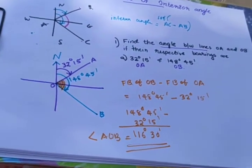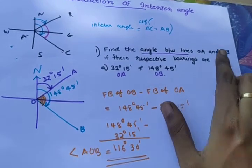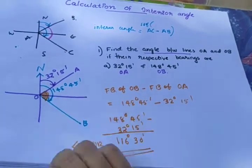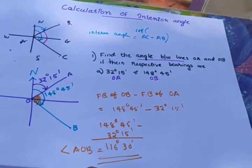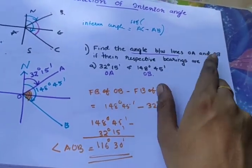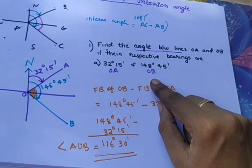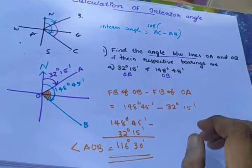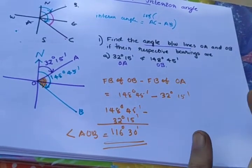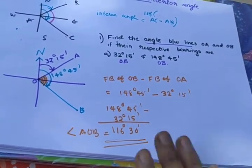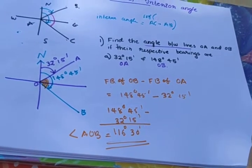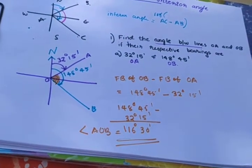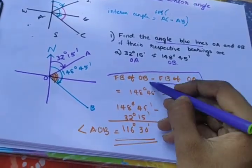Find the angle between lines OA and OB. You can ask about the angle between them — the angle is a curve. Draw the angle; bearings are the correct specific bearings. With the same two or three bearings, OB is correct. So it will be different. The formula is: forebearing of B minus forebearing of A.